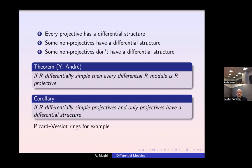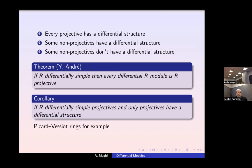To sum up: every projective R-module has a differential structure. Some non-projectives have a differential structure, and some don't — as shown by examples two and three. There's a very interesting theorem by Yves André which says if R is differentially simple, then every differential R-module is actually an R-projective. In particular, this applies to Picard-Vessiot rings, and for such a ring, if R is differentially simple, then projectives and only projectives have differential structure.